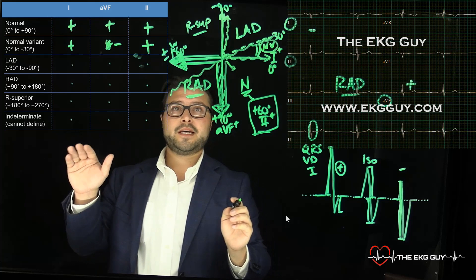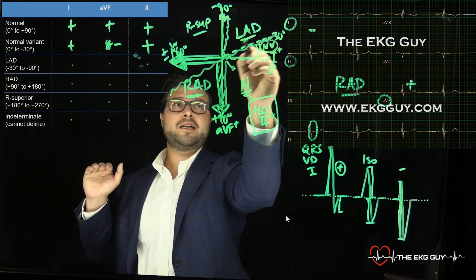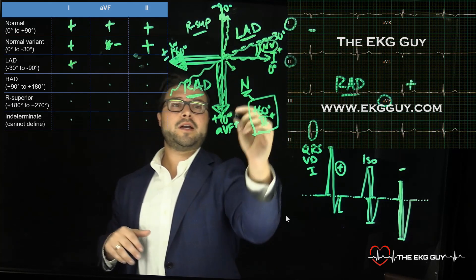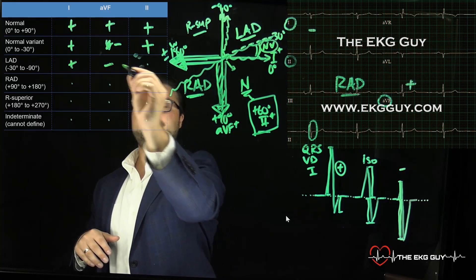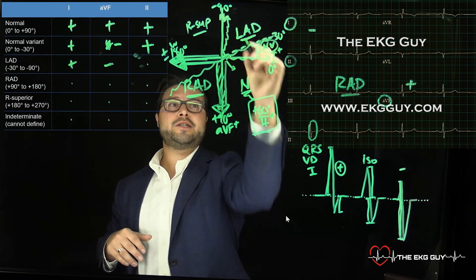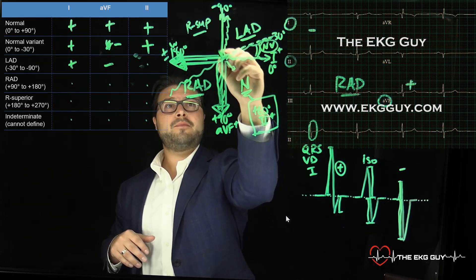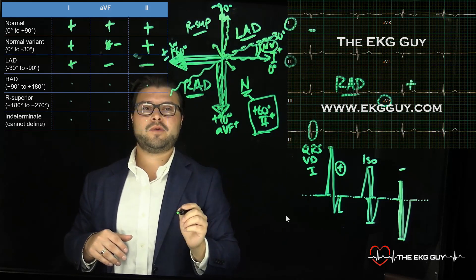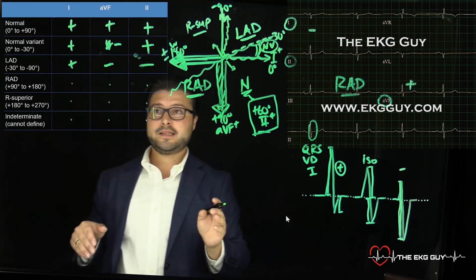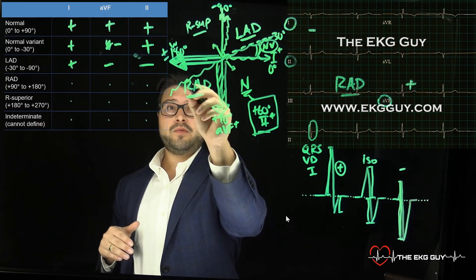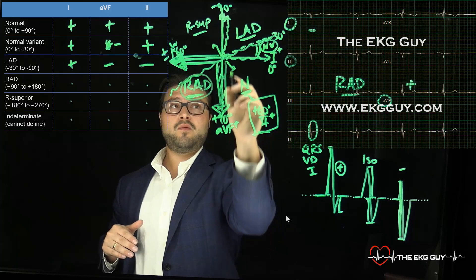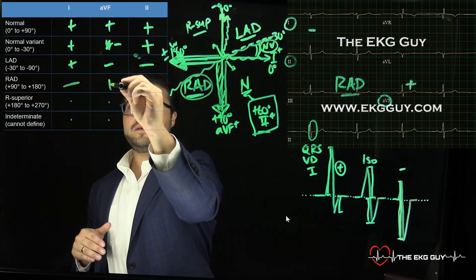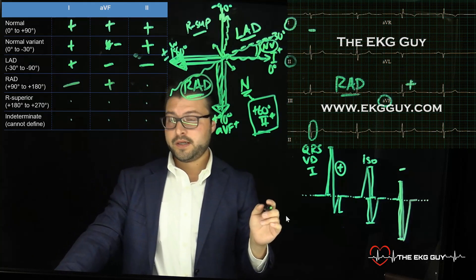For left axis deviation, you want to end up in the upper-left quadrant: positive in lead I, negative in AVF, and lead II should also be negative — going away from its positive end at 60 degrees. For right axis deviation — the one we saw — you want lead I to be negative and AVF to be positive.